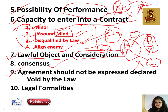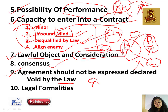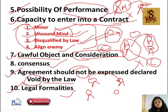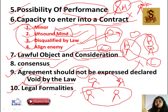Next point: Agreement should not be expressly declared void by the law. Agar Mr. A aur Mr. B ke beech koi shart laga lete hain - jaise satta wagera - toh yeh contract nahi kehlaayega. Agreement void nahi honi chahiye jo law ne void declare ki ho. Next point: Legal Formalities - jo bhi legal formalities hain ek contract ko pura karne ki, woh saari fulfill honi chahiye.